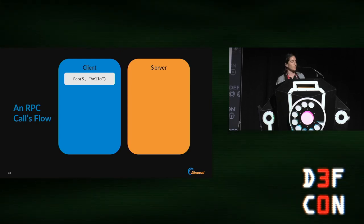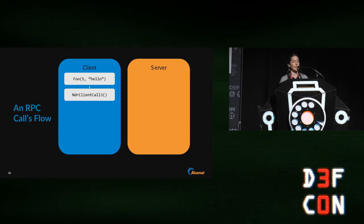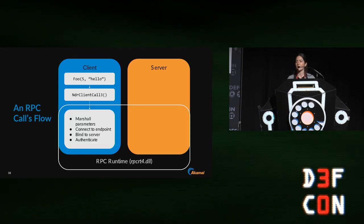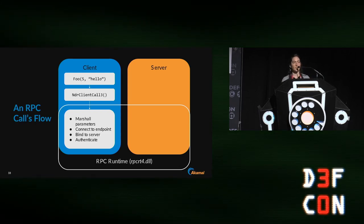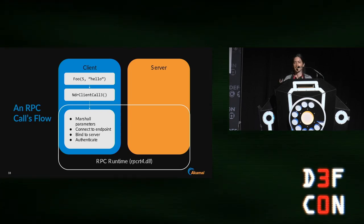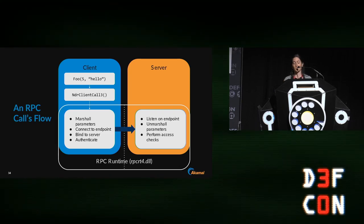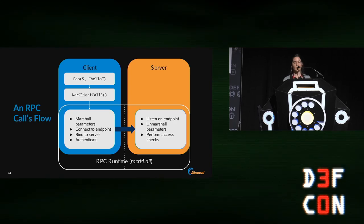Let's wrap up with the full communication flow. The client tries to call foo. When compiled, it calls an RPC runtime function called NDR client call. The RPC runtime is a library called rpcrt4.dll — it implements both client and server sides of RPC. On the client side, it marshals the parameters into network representation and handles connecting to the endpoint and authenticating if necessary. On the server side, it listens on the endpoint, unmarshals the parameters, and performs access checks on the RPC interface.